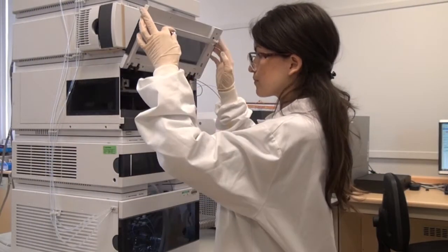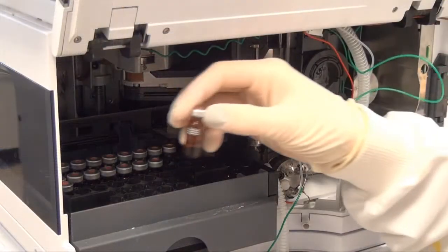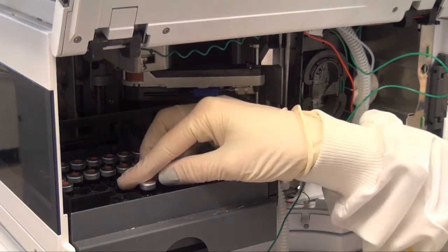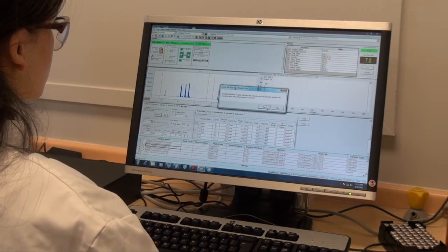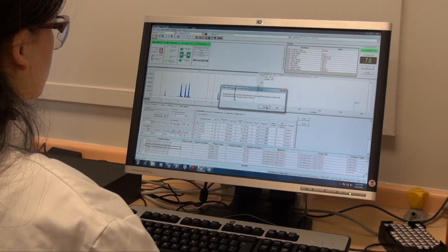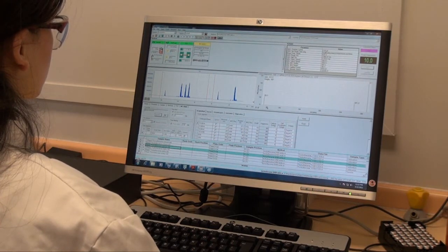It is also very flexible in the types of analytes it can be used for, from vitamins and minerals, through mycotoxins and other contaminants, to illegal dyes. Its speed of throughput means that it can separate and quantify around 100 pesticides in about 10 minutes.